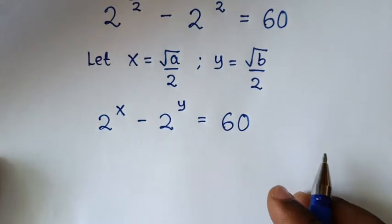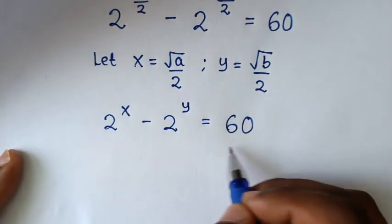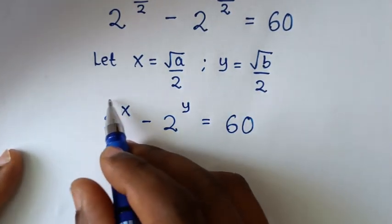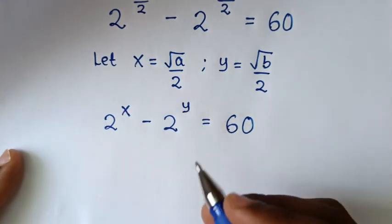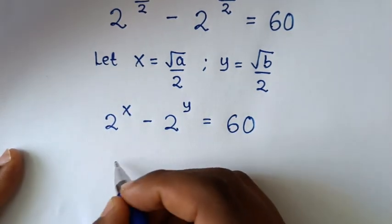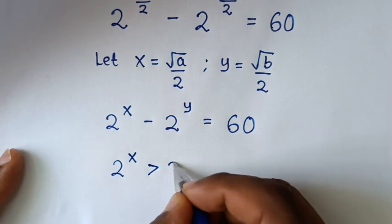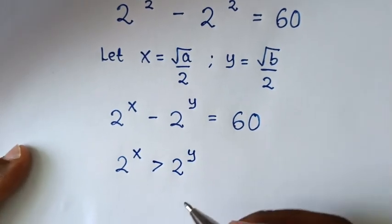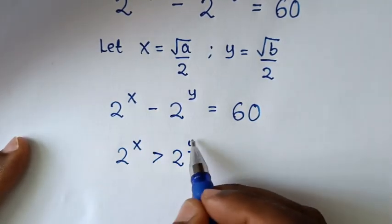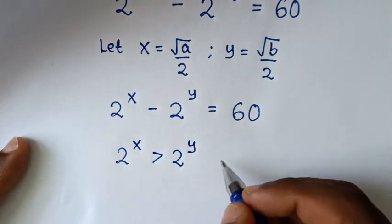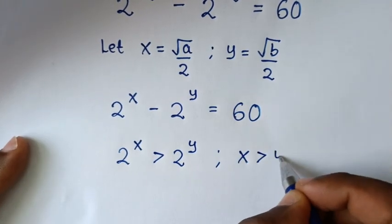In the next step, to get this positive value of 60, 2 to the power of x should be greater than 2 to the power of y. Since we have the same base of 2, we compare the powers. So it will be x is greater than y.